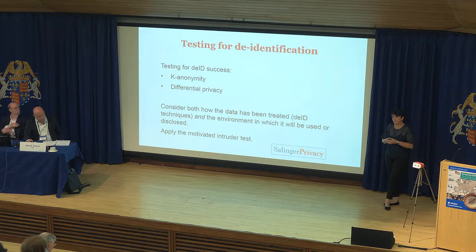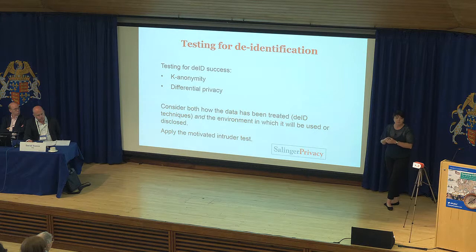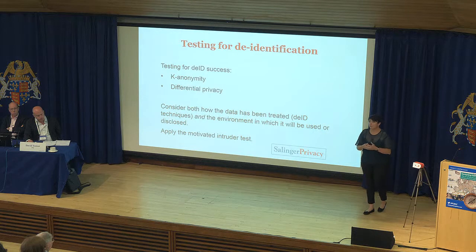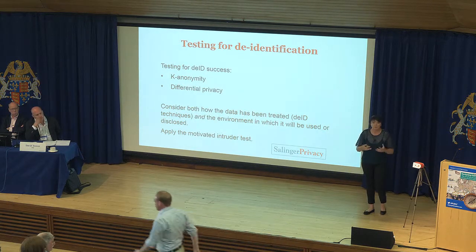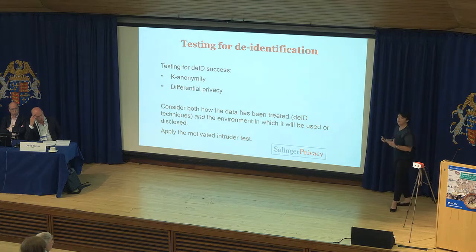Don't just ask: could the researcher with access to this data figure out who someone is, or can they figure out which data belongs to Joe Bloggs? But could the motivated intruder — the organised criminal with lots of resources and motivation behind them — could they figure it out?